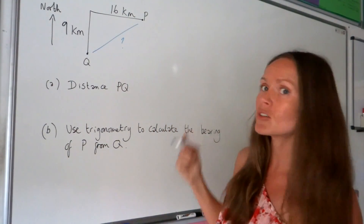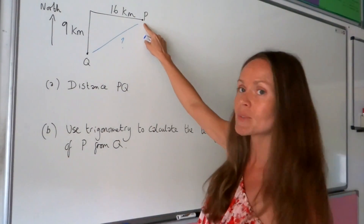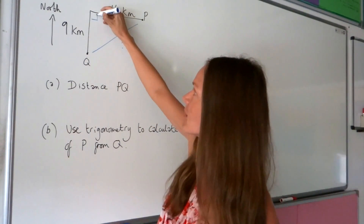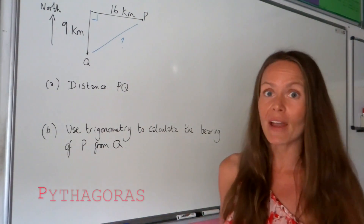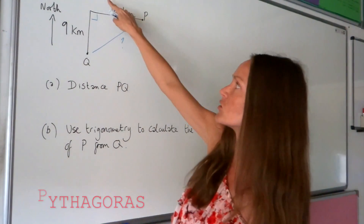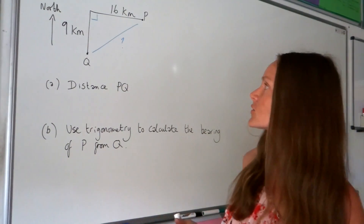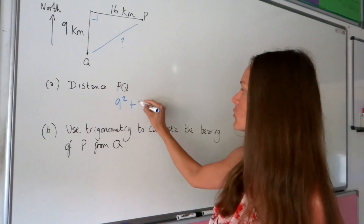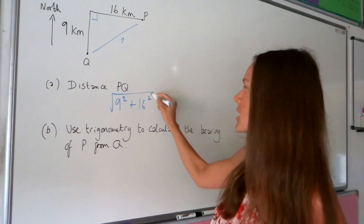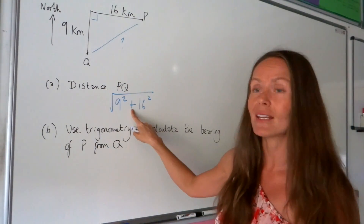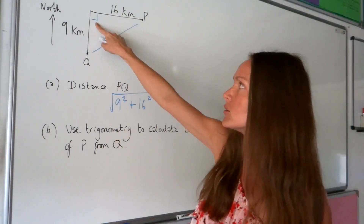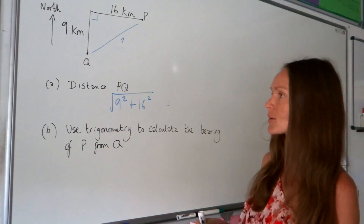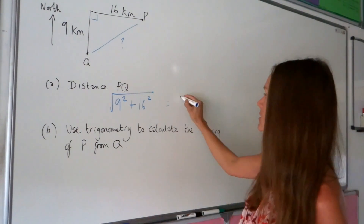I know this is a right-angle triangle because the exam question told us the ship sails from P west and then south to Q, which means that angle is 90 degrees. We can use Pythagoras to work out the unknown side. Because we're finding the hypotenuse we square and add those two sides together before square rooting — it's always plus when finding the hypotenuse. When I put that in the calculator and round to three significant figures I get 18.4 kilometres.